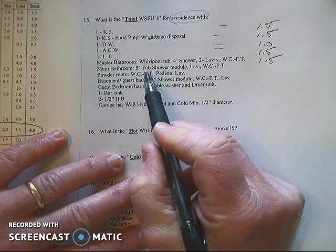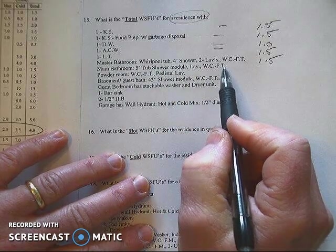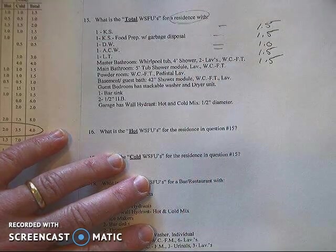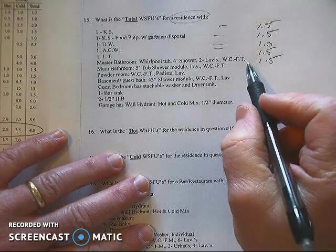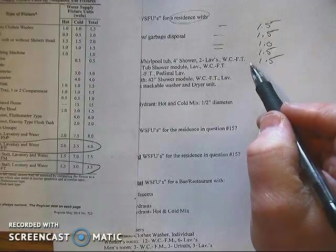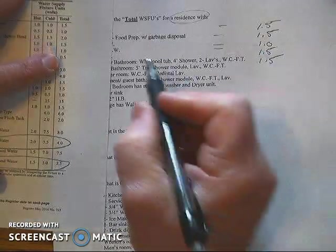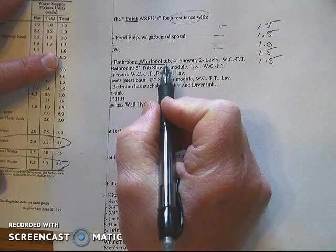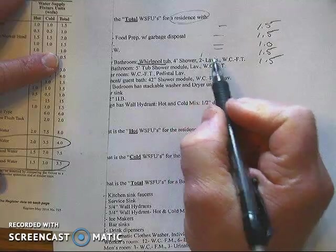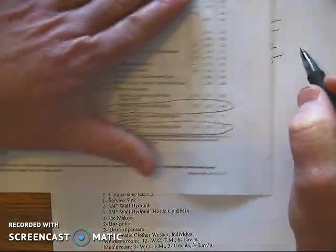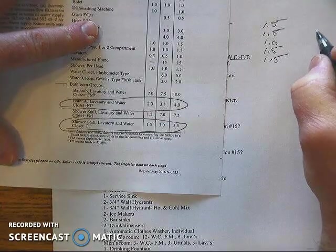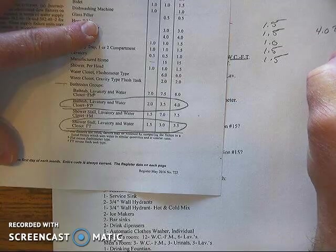Now it really doesn't matter how you lump these fixtures together. If I go tub, lav, and water closet or if I go shower, lav, and water closet, either way the grand total for those fixtures will be the same for a bathroom group plus the extra fixtures. So for this one I'm going to simply take the whirlpool and one lav out of the two and then we'll take the water closet and so that would be a bathroom group with a grand total load of four. I'm just going to write that down over here. That's my bathroom group load.